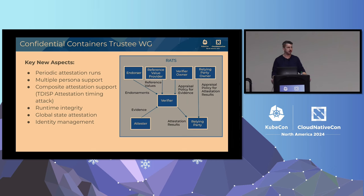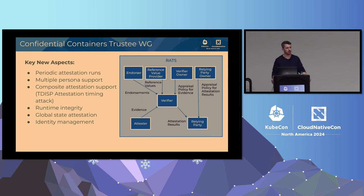Another big topic is runtime integrity. Systems can change during runtime and we want to catch that. Most environments are single node, but we need to take care of global state attestation across multiple nodes, multiple clusters, or even multiple availability zones. You need to attest your complete global state. And of course, identity management — you need to know who is coming in and out of your secure enclave, so you always need a proper identity for your hardware devices, peers, nodes, and everything interacting with your secure enclave.